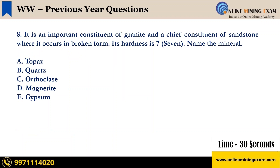It is an important constituent of granite and a chief constituent of sandstone, where it occurs in broken form. Its hardness is 7. Name the mineral. A. Topaz. B. Quartz. C. Orthoclase. D. Magnetite. E. Gypsum. Your time starts now.